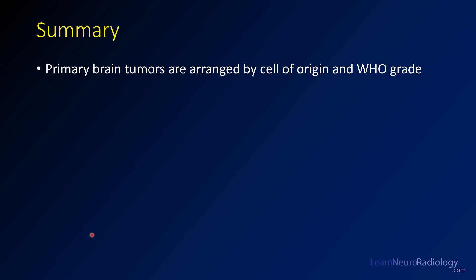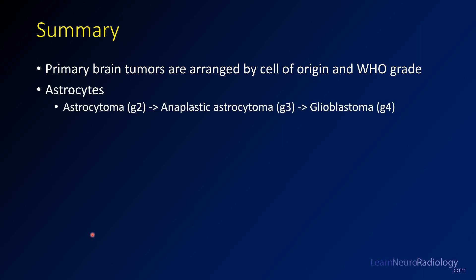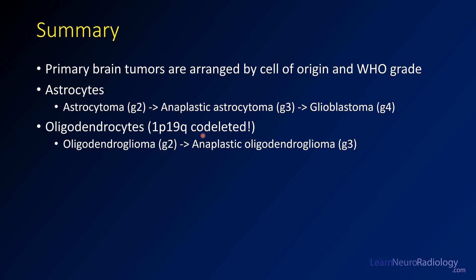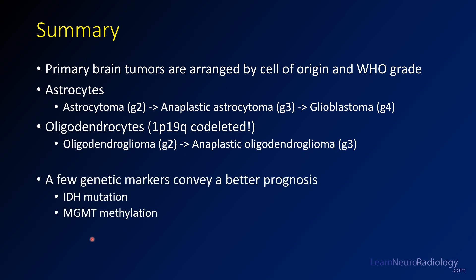Think about how primary brain tumors are arranged by their cell of origin and WHO grade. Astrocytomas range from grade 2 to grade 4, with glioblastomas being the most common astrocytomas and the most common primary brain tumors. Oligodendrogliomas must have a 1p19q codeletion and an IDH mutation, and come in grade 2 and grade 3 flavors. IDH mutation and MGMT methylation are associated with better prognosis, so it's definitely good to know if patients have those.